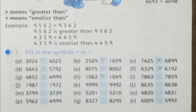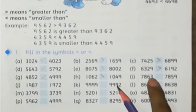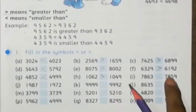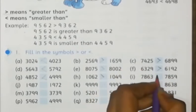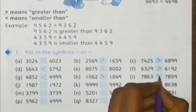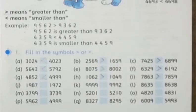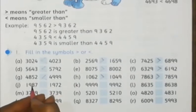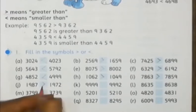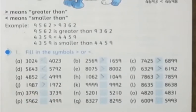Look at part I: 7863 and 7859 — 63 will be bigger, so we place the greater than sign. And then 1989 and 1972 — 1987 is greater from 1972.